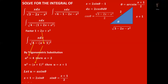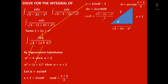We can now solve for cos theta. Since cosine equals adjacent over hypotenuse, substituting gives cos theta equals the square root of 3 minus 2x minus x squared, all over 2. We also have: x equals 2 sin theta minus 1, dx equals 2 cos theta d theta, and x plus 1 equals 2 sin theta.